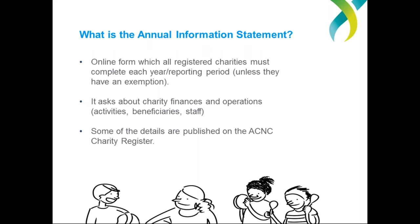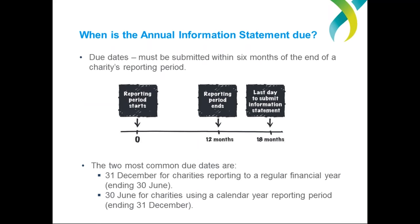You can look at your organisation's charity register listing by going to acnc.gov.au/charityregister. The annual information statement's due dates vary, but the form must be submitted within six months of the end of the charity's reporting period. The two most common deadlines are June 30 and December 31, the former being applicable to most people today. You can check your charity's AIS deadline by visiting its entry on the charity register, and a full rundown of AIS due dates can be found at acnc.gov.au/reportingduedates.